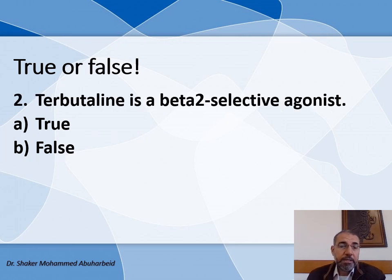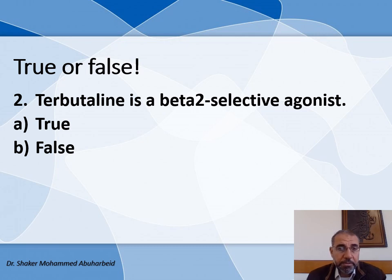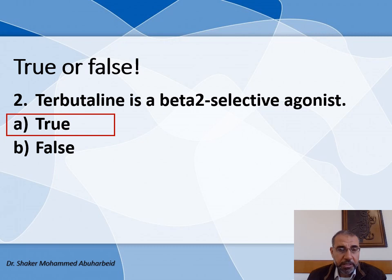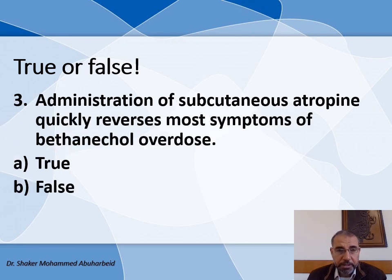Second true/false question: Terbutaline is a beta-2 selective agonist — true or false? The answer is true. It is used for treatment of asthma and other respiratory diseases.